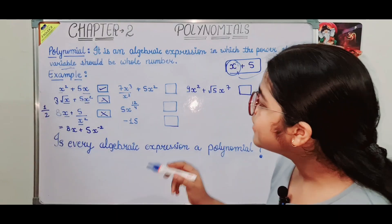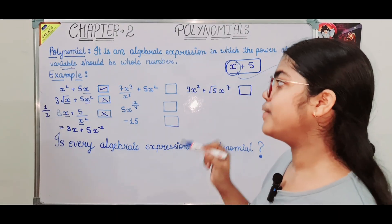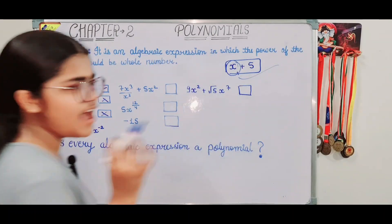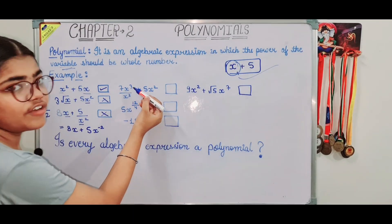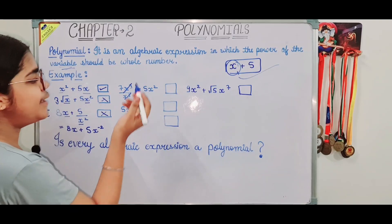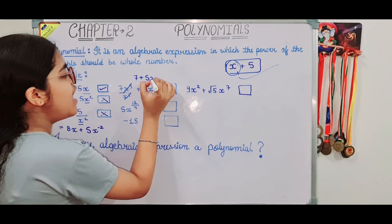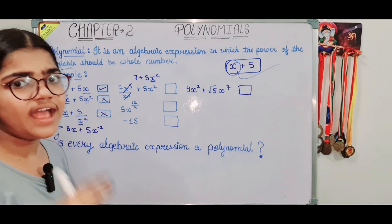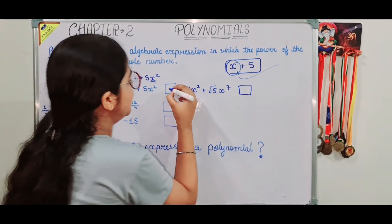The fourth example: 7x cubed divided by x cubed, plus 5x squared. Here the x cubed terms cancel out, leaving only 7 plus 5x squared. The variable x has power 2, which is a whole number. So this is a polynomial.